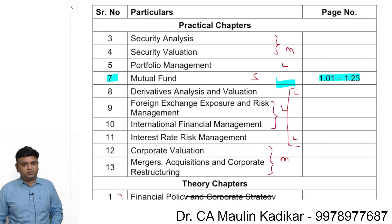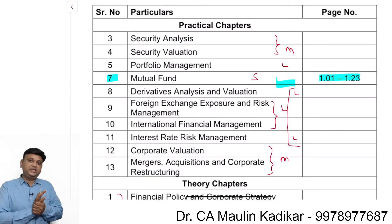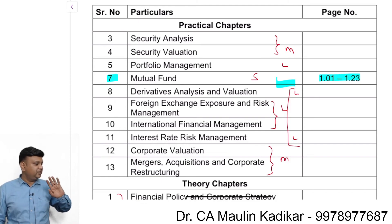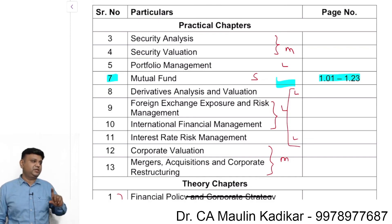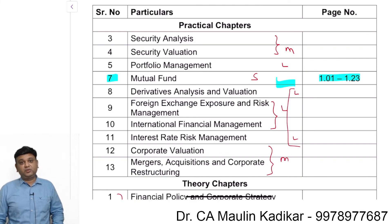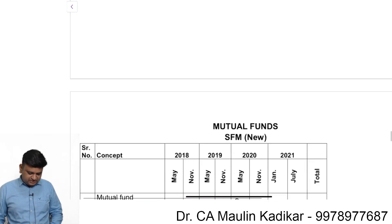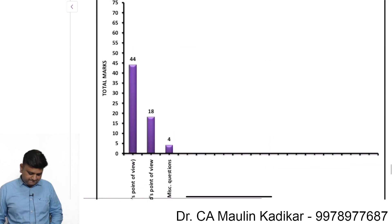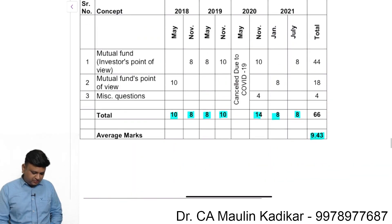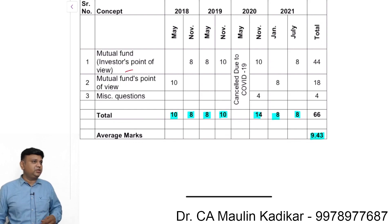The strategy for preparation is that lengthy chapters should always be done last, because they can never be fully revised. We can revise them using formulas and very important concepts to finish revision. If we start revision from those chapters, it can be very time consuming. This is the bifurcation of chapters, which concepts are asked and total number of concepts have also been explained.